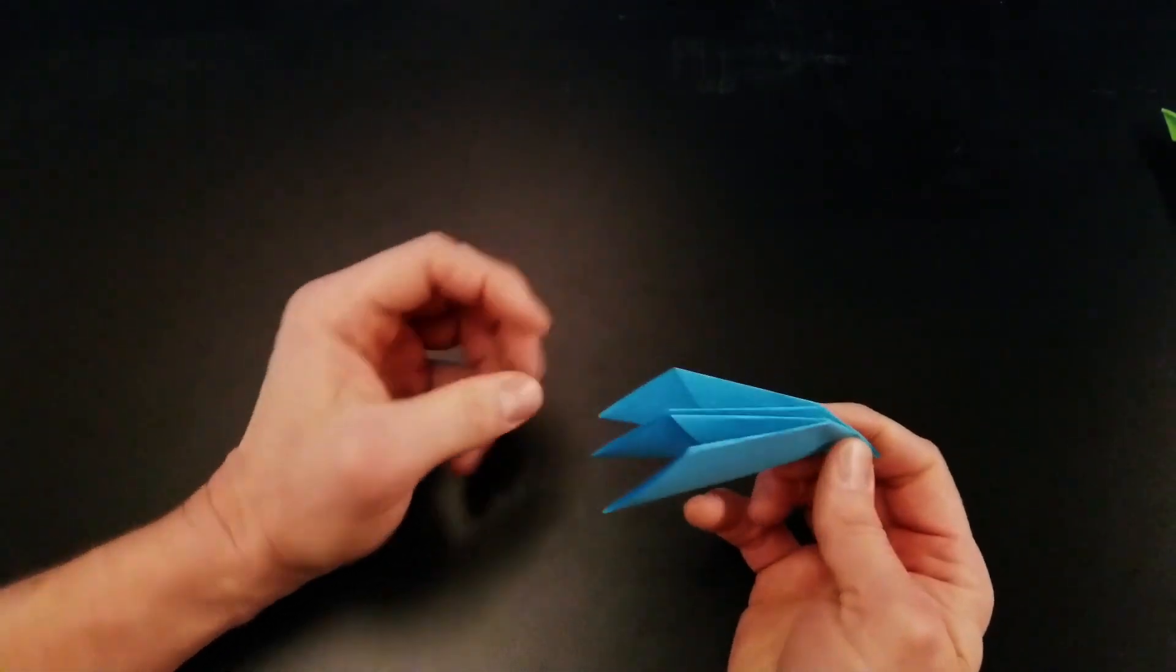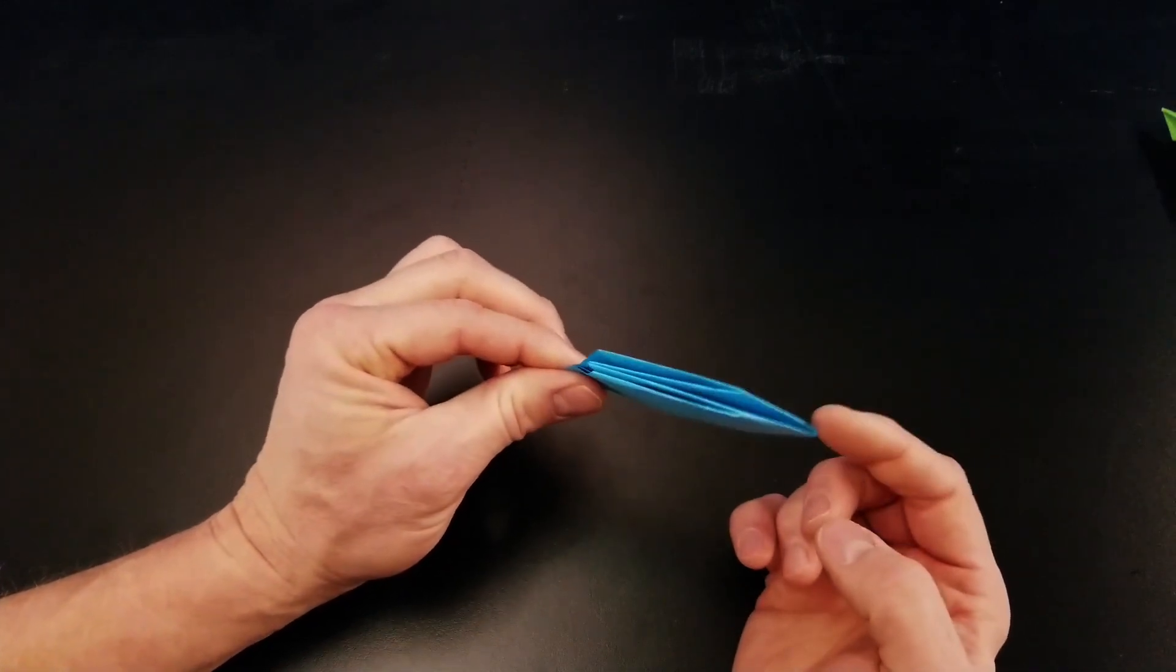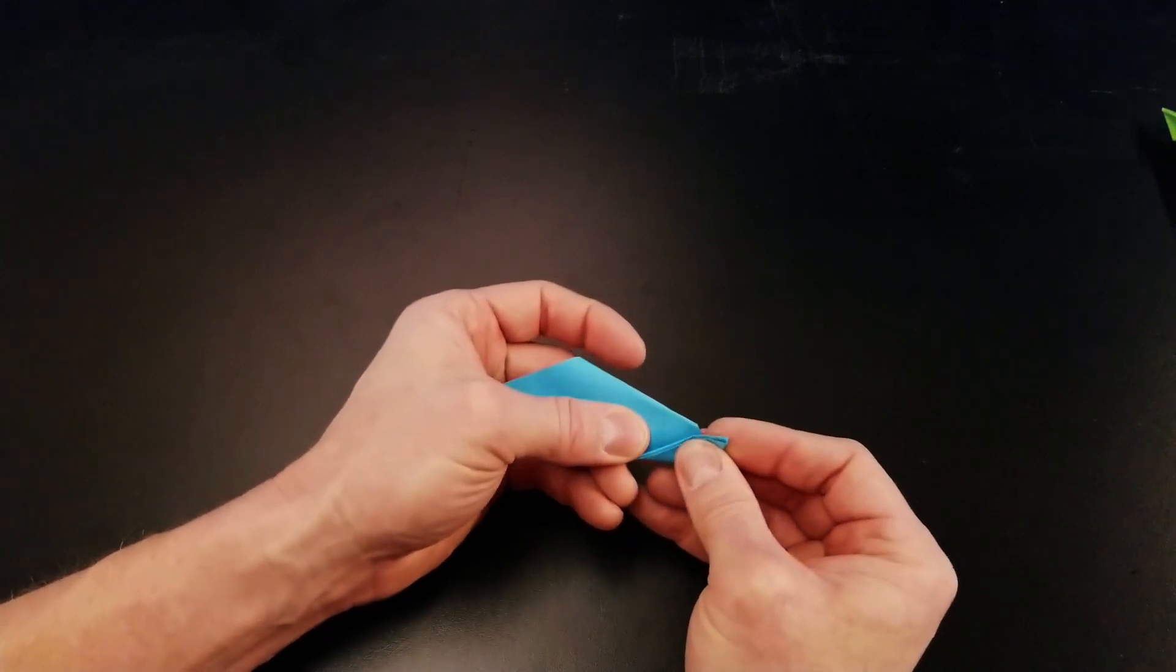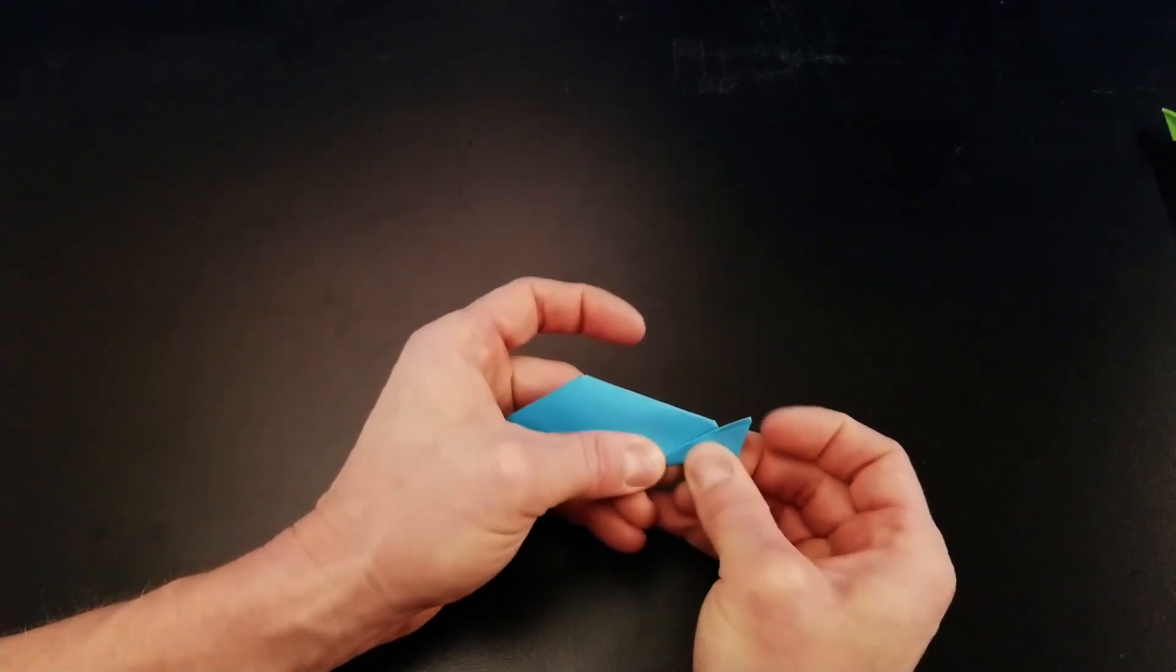Now I have two sides, an open side and a closed side. I'm going to take the closed side and I'm going to just bend this up just before this point.